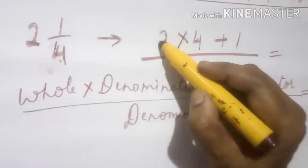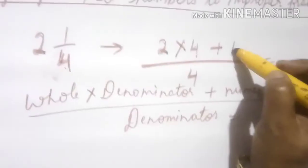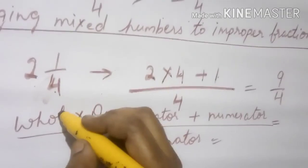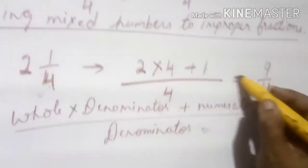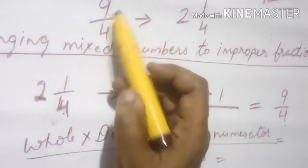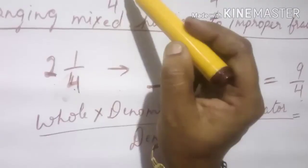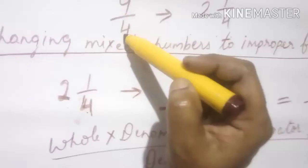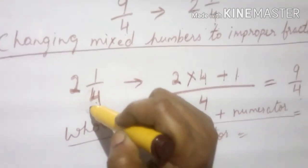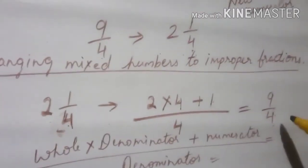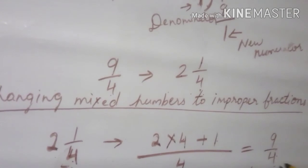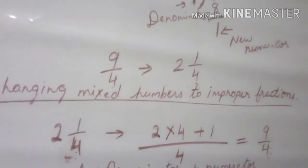4 multiplied by 2 is 8, plus 1 is 9. So 9 by 4. Therefore, 2 and 1 by 4 gives you 9 by 4. Here I have converted an improper fraction into a mixed fraction, and here a mixed fraction is converted into an improper fraction.